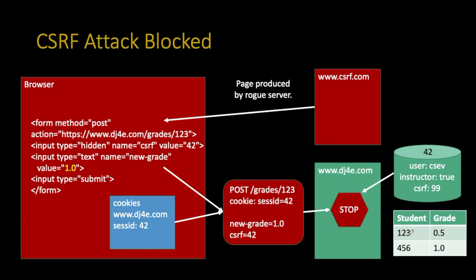With the attack blocked: the rogue server can generate a page, but it doesn't know what the CSRF token is. It might put something in, but it won't be the right CSRF. The post happens, all the data is gathered up, the CSRF is sent but it's not the right one. The session ID is sent in and the session is pulled — we know it's user C7, we know it's the instructor — but we check if the CSRF matches, and it blows up. So we refuse the post, probably log the user out, and log a security error. By having this CSRF number in the session, we can take care of that attack.